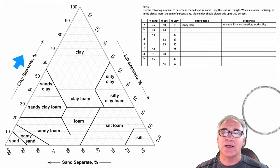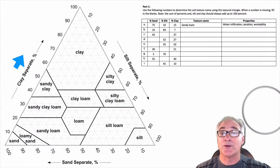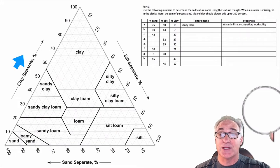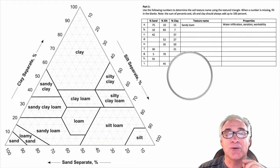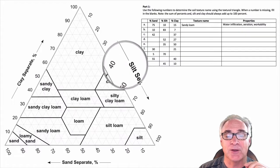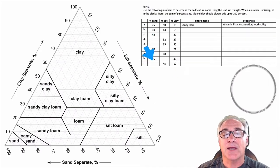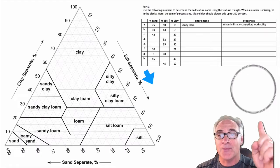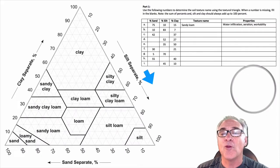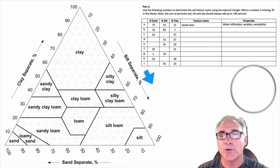If you take a look at the clay area first, you'll notice it goes from the bottom, which is 0%, all the way to 100% at its apex. Then when we look at the silt component, located here on the right, it actually goes from 0 at the apex all the way to 100 at the right corner.